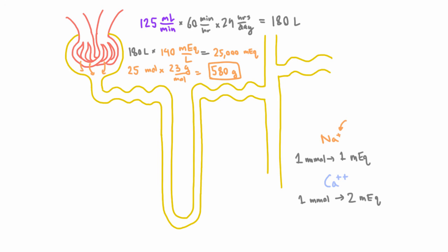So at most you want to excrete 2 grams. So as you can see, 580 grams are getting filtered, and you only want to end up excreting maybe 2 grams, for example, if that's how much you're eating every day. So that means that the vast, vast majority needs to be reabsorbed here along the nephron. And if we use these numbers, it would be about 578 grams of sodium.